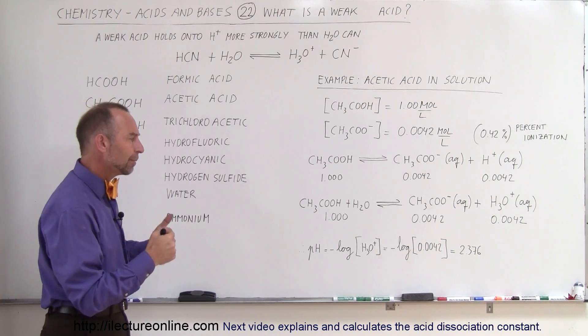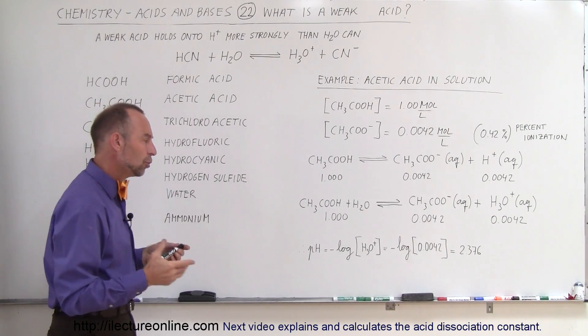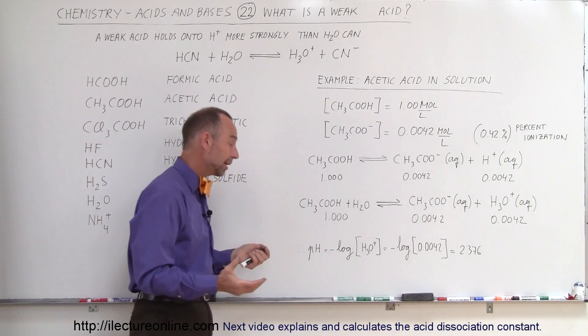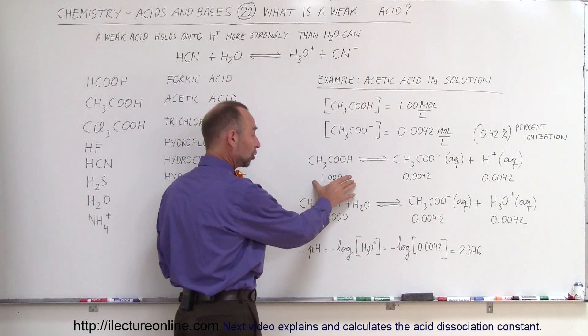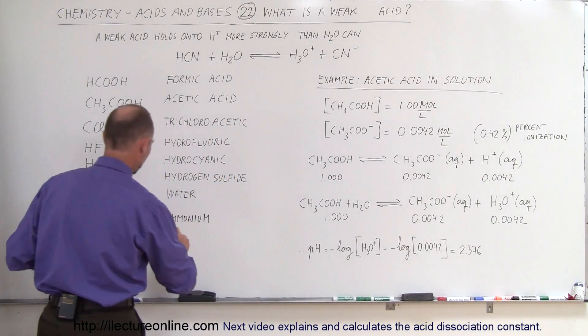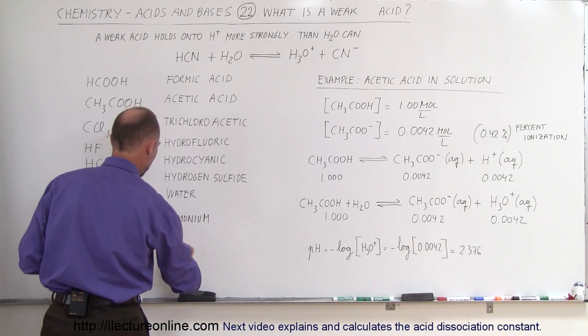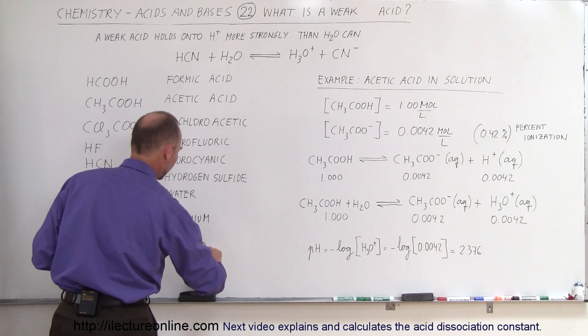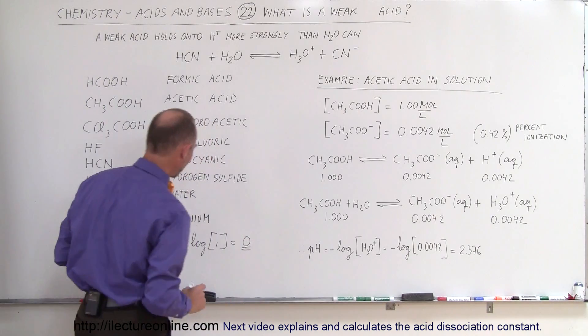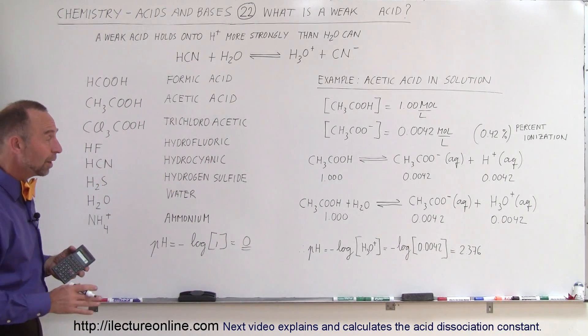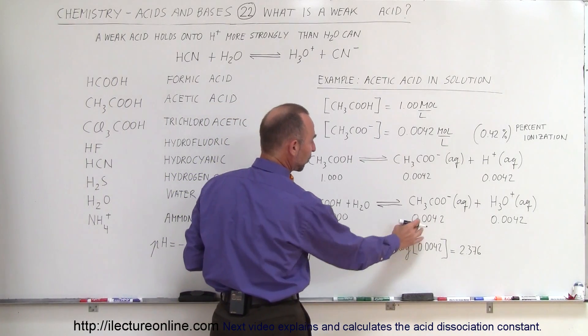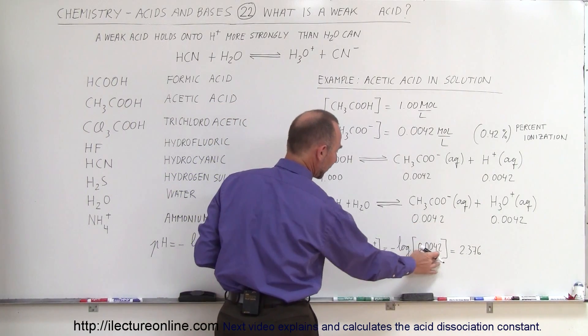So if we now want to know what the pH of that solution is, notice that the pH will depend upon the concentration of the hydronium ion. Even though we start out with a 1 molar solution, which would give us a pH of 0 (pH equals minus log of 1), instead notice that the concentration of the hydronium ion is only 0.0042. So we take the log of that, and we get a pH of 2.376.